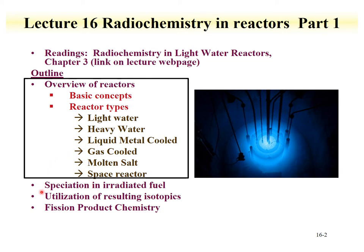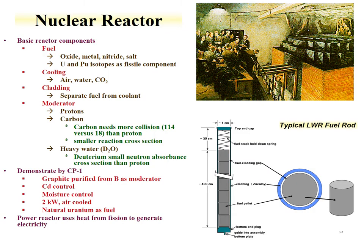In Part 2, we'll go into the chemistry occurring in these reactor systems and how that information is used to understand the reactors. Nuclear reactors, regardless of type, have some common properties. All reactors have fuel — usually uranium isotopes, primarily enriched uranium-235 in light water reactors. However, plutonium isotopes can also be used in MOX fuel, and the chemical forms can be oxides, metal, nitrides, or even salt in liquid form. The main commonality is a fissile isotope used to drive fission and produce heat.